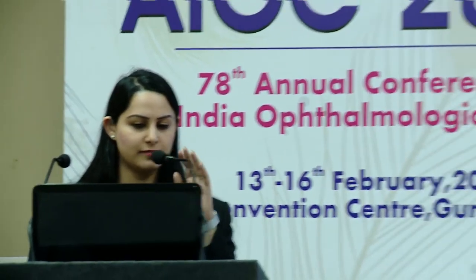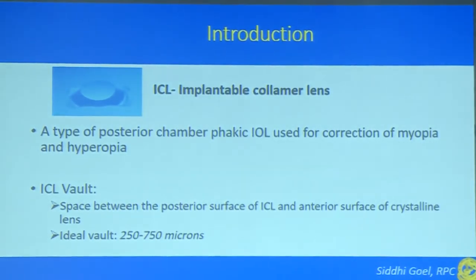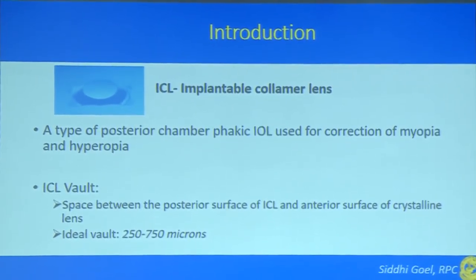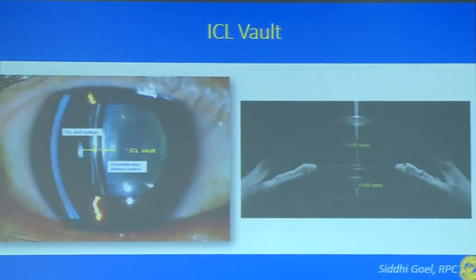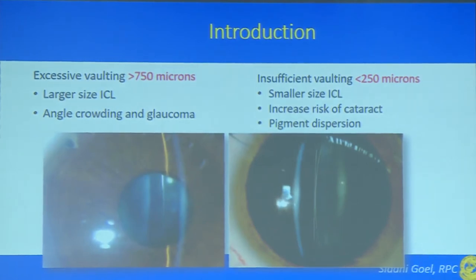The ICL is a posterior chamber phakic IOL used for correction of myopia and hyperopia. ICL vault is the space between the posterior surface of the ICL and the anterior surface of the crystalline lens, with an ideal target of 250 to 750 microns. Excessive vaulting greater than 750 microns — resulting from a larger-sized ICL — can lead to angle crowding and glaucoma, while insufficient vaulting less than 250 microns — from a smaller ICL — can increase the risk of cataractogenesis and pigment dispersion.